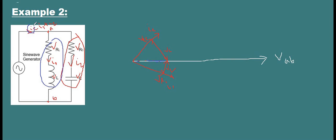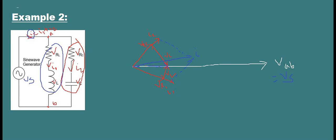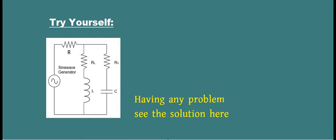To find the total current I, we add I1 and I2 as phasors to get the resultant current I. The resultant voltage VAB equals the supply voltage VS. I have a problem for you to try yourself. If you have any trouble with it, please see the solution provided. Thanks for watching.